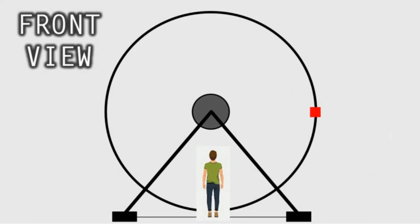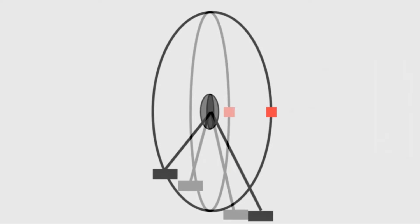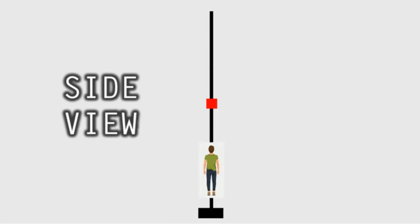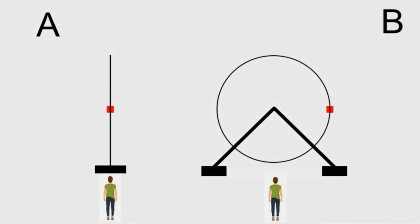But what if, instead of looking at the giant wheel from the front, we look at it from the side? Rotating the giant wheel towards us until it ends up looking like this. As you look at it from the side, it just looks like a vertical line. Here are the two views, A and B. Now, as the giant wheel rotates, the movement of the red square in view A is just in a straight vertical line, going up and down. And in view B, just in a simple circular motion.